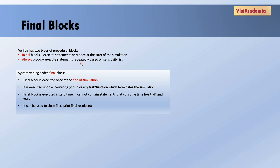So what is a final block? Similar to an initial block, a final block is also executed only once, but the difference is it is executed at the end of the simulation. To identify the end of simulation, whenever a dollar-finish or any task or function which terminates the simulation is encountered, that denotes the end of simulation, and at that time the final block will be executed.